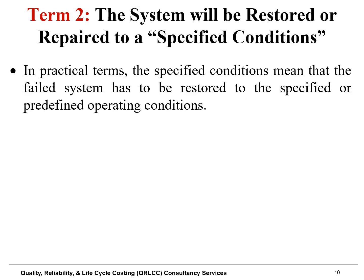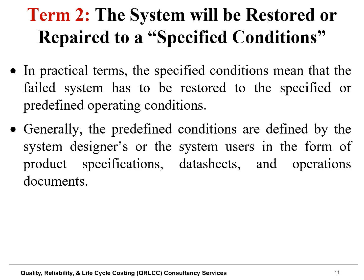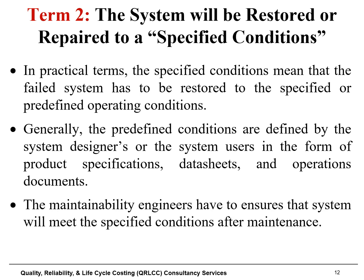Term two states that the system or component will be restored or repaired to a specified condition. In practical terms, this means the failed component or system has to be restored to the specified or predefined operating conditions. Generally, these predefined conditions are defined by the component designer or users in the form of product specifications, data sheets, and operations documents. Therefore, maintainability engineers must ensure that the component will meet the specified conditions after the implementation of maintenance interventions.